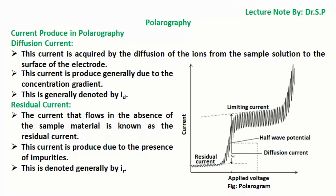Current produced in polarography — diffusion current: this current is acquired by the diffusion of ions from the sample solution to the surface of the electrode. This current is produced generally due to the concentration gradient, and is denoted by ID. Residual current: the current that flows in the absence of the sample material is known as the residual current. This current is produced due to the presence of impurities, and is denoted by IR.